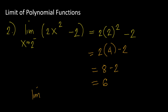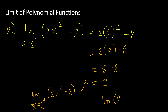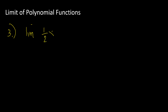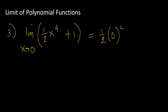It also means the limit of 2x² minus 2 as x approaches 2 from the right is also equal to 6. Since left and right are both equal to 6, then the two-sided limit of 2x² minus 2 as x approaches 2 is also equal to 6. Another example: the limit of (1/2)x⁴ plus 1 as x approaches 0. Just substitute 0: we get (1/2)(0⁴) plus 1, which is 0 plus 1. The answer is 1.